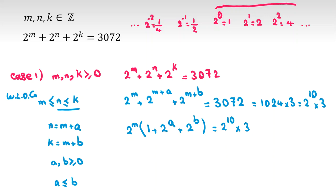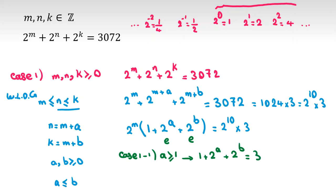In Case 1.1, a is greater than or equal to 1. Then 2^a is even and 2^b is even, so 1 plus 2^a plus 2^b is odd. We conclude 1 plus 2^a plus 2^b equals 3. But since a is at least 1, 2^a is at least 2 and 2^b is at least 2, giving 1 plus 2 plus 2 equals 5. That's impossible.